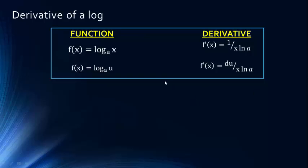So the formula should be 1 over u times log a — that is, 1 over the argument times the natural log of a, times the derivative of u. This is really just the chain rule: we first take the derivative of the outer function, which is the log, and then multiply by du or u prime — the derivative of the inner function.